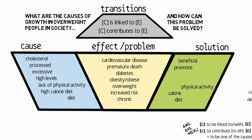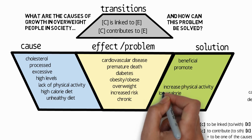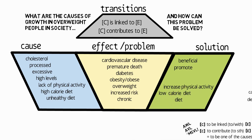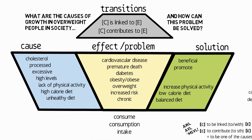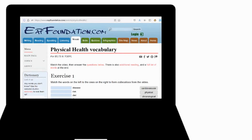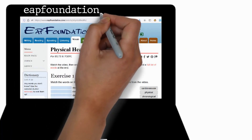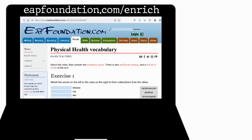Words like physical activity, calorie, and diet could be either a cause or a solution. For example, lack of physical activity, a high calorie diet, and an unhealthy diet are causes, while increasing physical activity, eating a low calorie diet, or eating a balanced diet are solutions. More neutral words include consume, consumption, and intake. I hope you found these 20 words and phrases useful. For more on this topic, including other topics and exercises to practice these words and phrases, please visit eapfoundation.com/enrich.